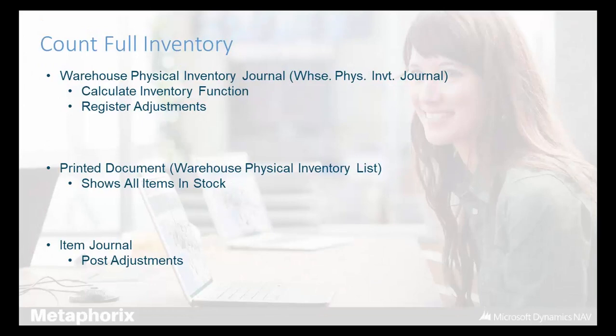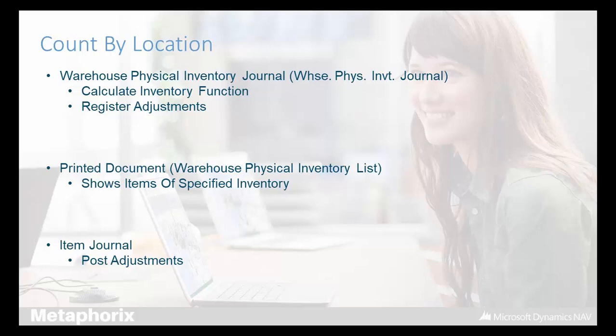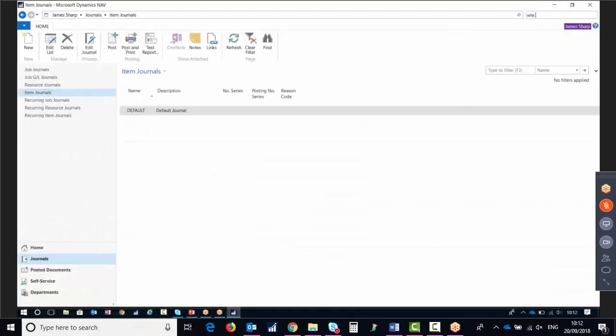That's it for counting your full inventory: view how much stock the system thinks you've got, print the document if you want to, override the quantity with how much you've actually got, the system calculates the difference, post your item journal, and that's it. But let's say you want to count just one location, or you've got five people doing a stock take across five locations — you might want to split that up, one printed document per location. It's the same process, you just filter the warehouse physical inventory journal on the location you want.